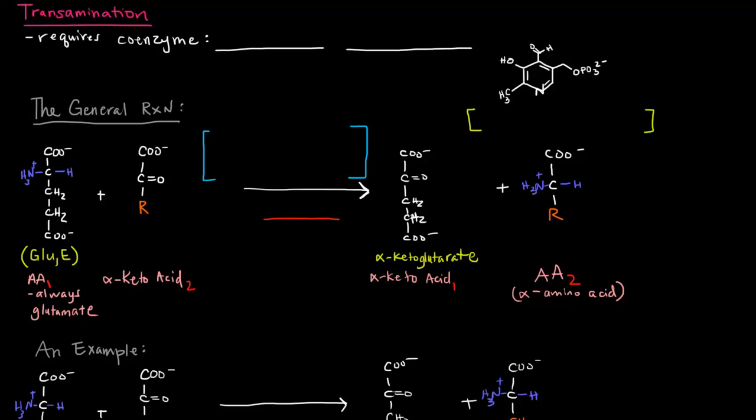Transamination as a process requires a coenzyme called pyridoxal phosphate. And pyridoxal phosphate I've actually drawn here. This is pyridoxal phosphate. And sometimes it's abbreviated as PLP or PERP. But this thing is required for transamination. What is transamination? Well, there's this sort of general reaction. The general reaction, we start off with an amino acid.